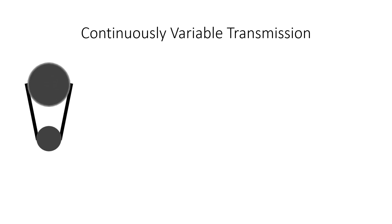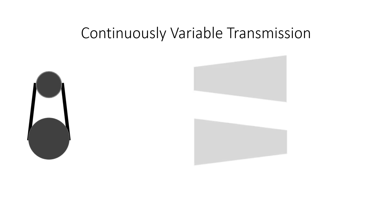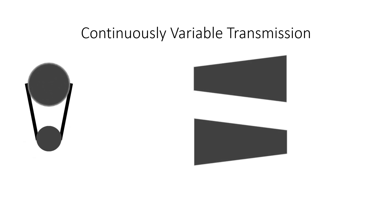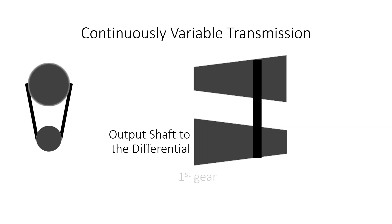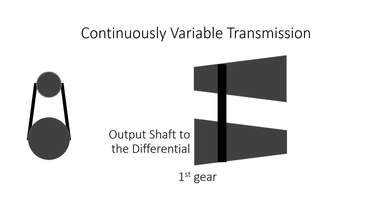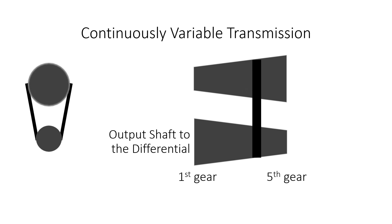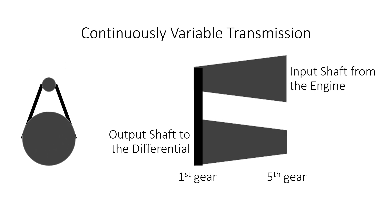A continuously variable transmission uses two conical rollers that are connected with a moving belt to vary the output shaft speed from the slowest one with the widest diameter to the fastest one with the narrowest diameter. The input shaft does the opposite.